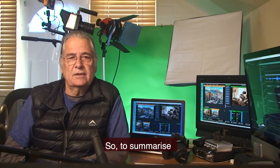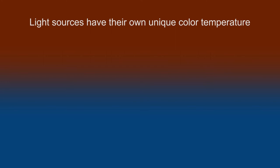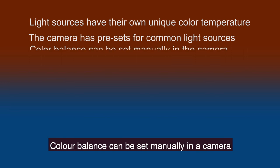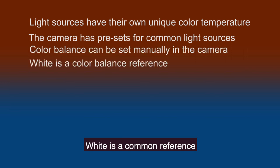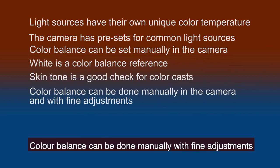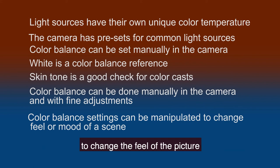To summarize: light sources have their own unique color temperature; the camera has preset settings to balance common light sources; color balance can be set manually in the camera; white is a common reference; skin tone is a good check for color casts; color balance can be done manually with fine adjustments; and the camera's color balance settings can be manipulated to change the feel of the picture.